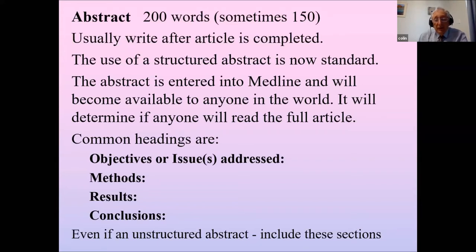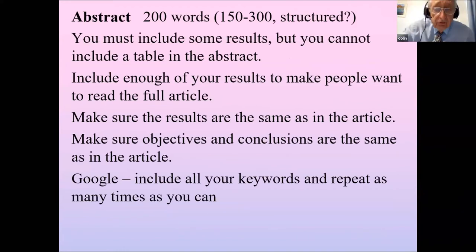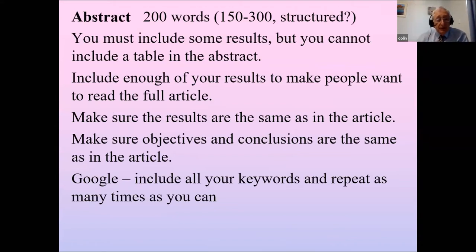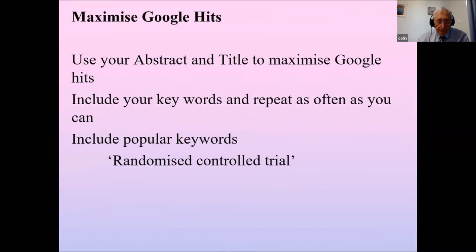Whether or not a journal includes headings in the abstract, you've still got to follow that outline: the objective or issue you're addressing, a statement on the methods and the results, and the conclusion. You must always give some results to attract a reader, and include as many keywords as you possibly can. At the moment, 'randomized controlled trial' is a very popular keyword, and 'COVID-19' would also be popular for 2020.